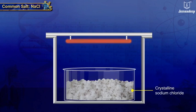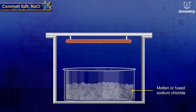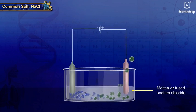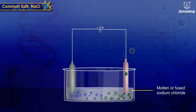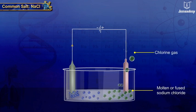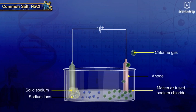NaCl heated at high temperature converts into molten state, called fused state, which conducts electricity. When fused sodium chloride is electrolyzed, chlorine gas is liberated at anode and sodium is deposited at cathode.